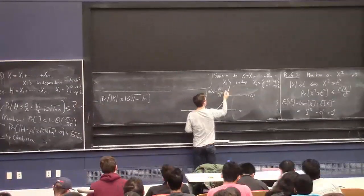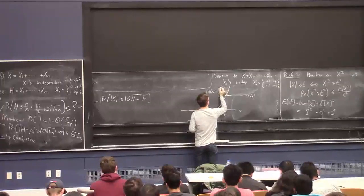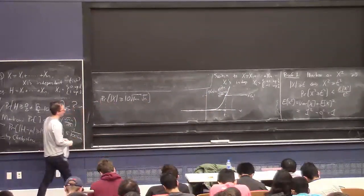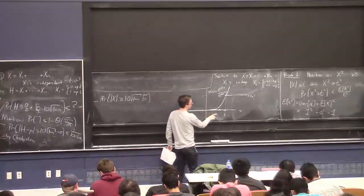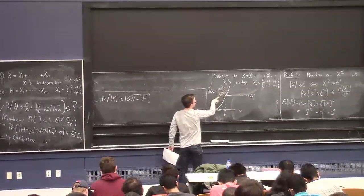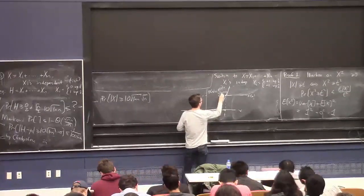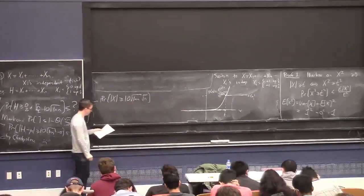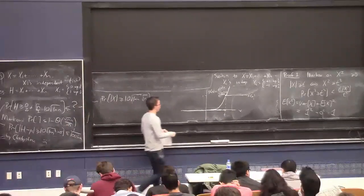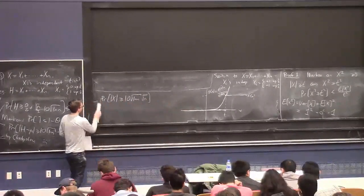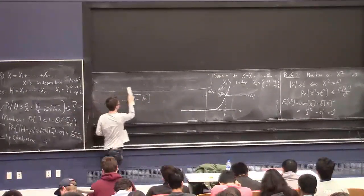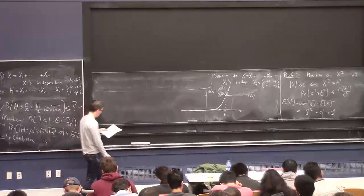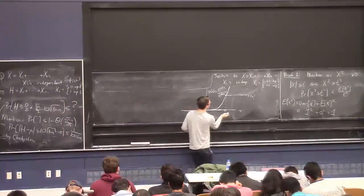We could take g of x to be e to the x divided by e to the t, so they match at x equals t. But it's better to be flexible: take g to be e to the lambda x for a parameter lambda I'll choose later. We want e to the lambda x over e to the lambda u — let me call it u instead of t — set up so they match at x equals u.